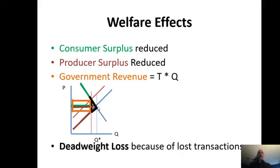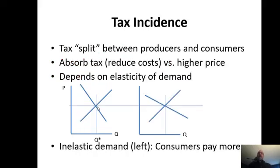Taxes do reduce overall welfare, and that's why some people are really anti-tax. Tax incidence is when the tax is split between producers and consumers, but it doesn't have to be equal. Sometimes it has to be completely absorbed by consumers because producers can pass it on and consumers will still pay it. Other times it has to be completely paid by producers — if they raised prices to cover the tax, they would lose too much business, so they have to come up with the money through lower costs. This depends on the elasticity of demand: if I'm hit with a tax, do my customers have somewhere else to go? Do they have substitutes? If they do, I can't raise the price — I have to come up with it myself.